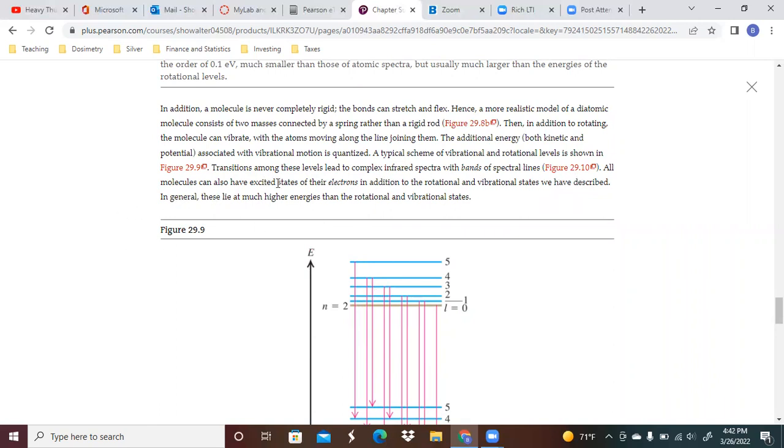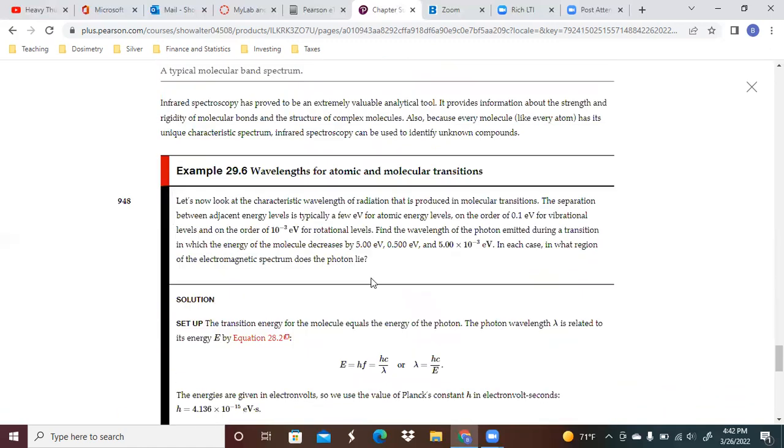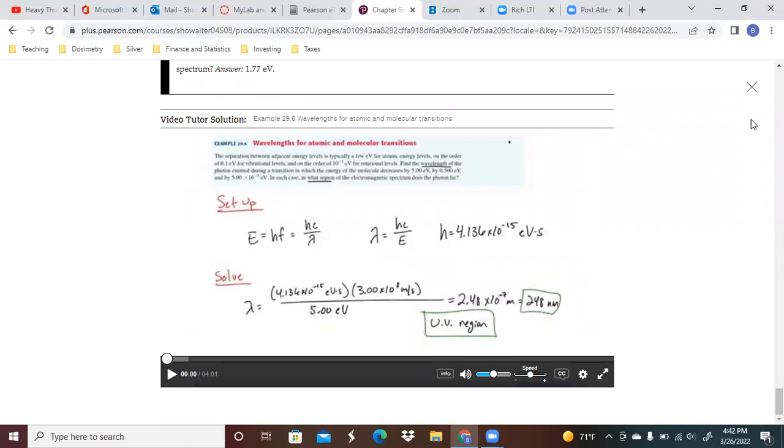All molecules can have excited states of their electrons in addition to the rotating and vibrating states we have discussed. In general, these lie at much higher energies than the rotational and vibrational states. And you've got a few problems there that you can work through.